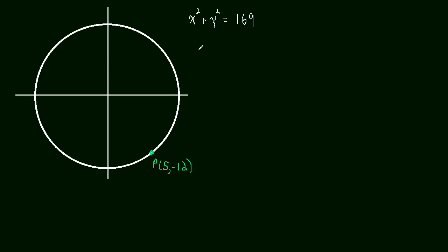And part A says find the slope of the line joining this point and the origin. So that's pretty easy. We have two points and we're just going to do negative 12 minus 0 over 5 minus 0, which is negative 12 fifths. Not too hard at all.